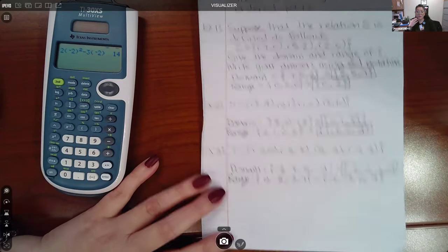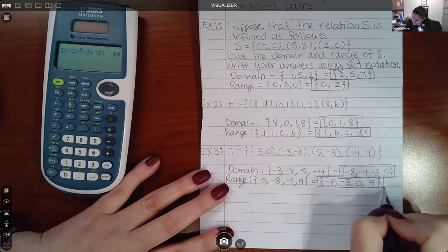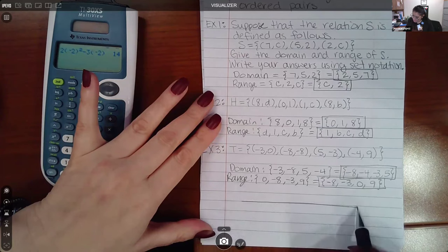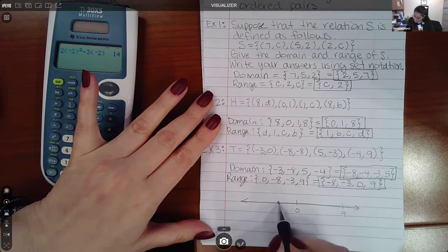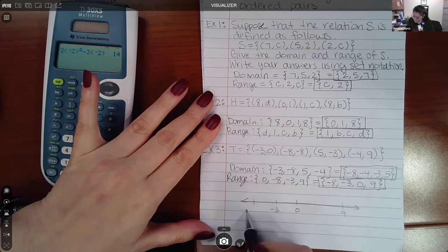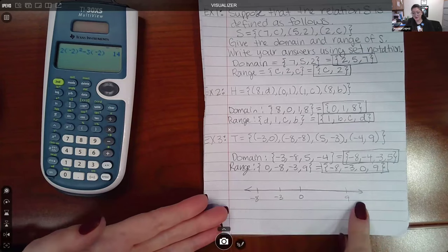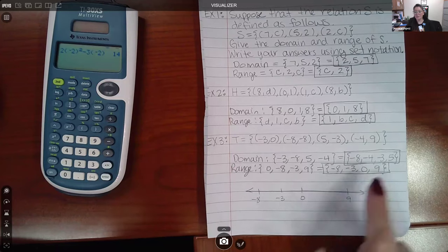When you're labeling, when you're putting them in order least to greatest, you do have to think of who's the left most on the number line. So here's my number line. Here's zero, positive nine would be somewhere over there, negative three somewhere over here, and negative eight somewhere over there. You have to go in the order from left to right on the number line. That's why I have them in this particular order.